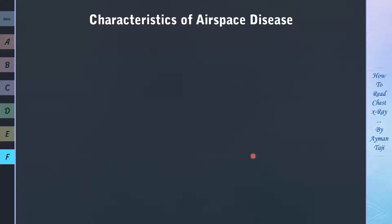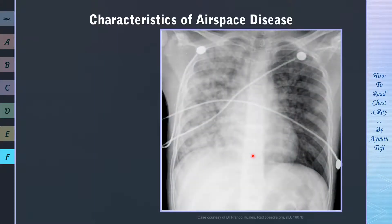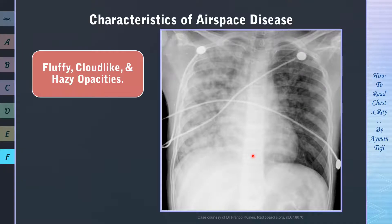Opacities caused by airspace diseases have some characteristics. Why would you say it tends to be more an airspace disease? First of all, airspace disease characteristically produces opacities in the lung which can be described as fluffy, cloud-like, or hazy. Let's take this case as an example — we can see clearly fluffy, cloud-like opacities, which are greater in the right than the left.